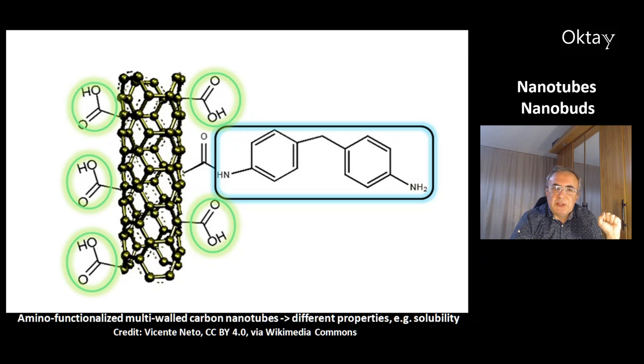You can do normal chemistry with fullerenes and carbon nanotubes too. This is an example of amino-functionalized multi-wall carbon nanotubes. With these functional groups, you can give these compounds different properties, for example different solubility.